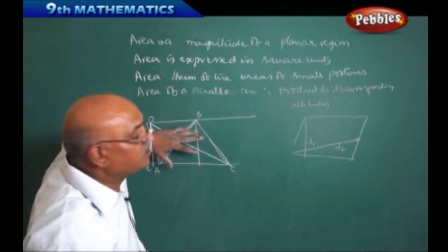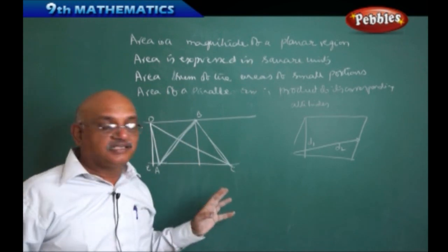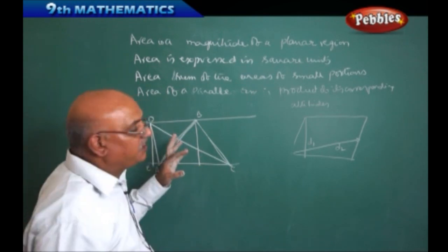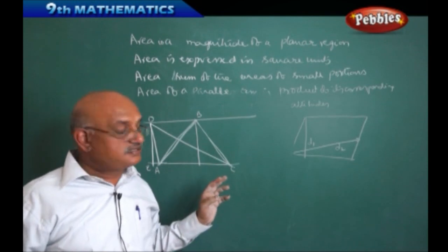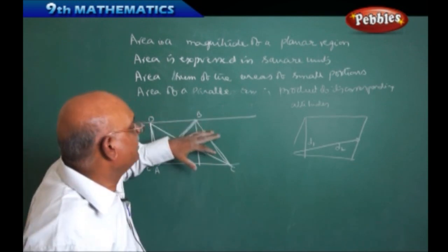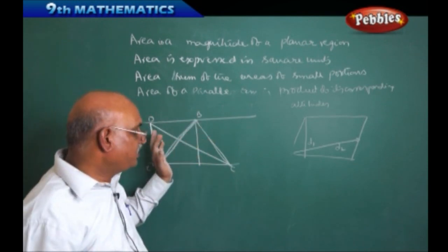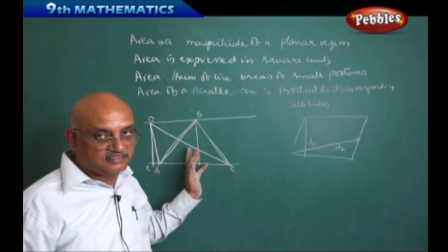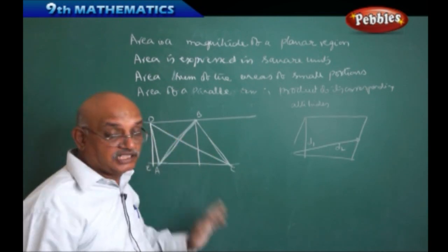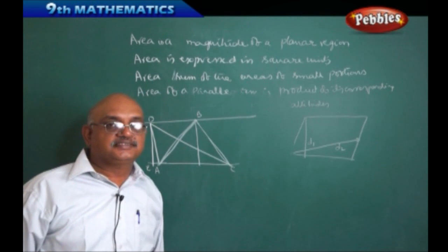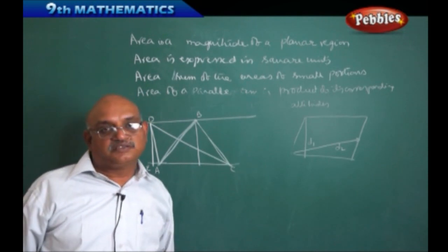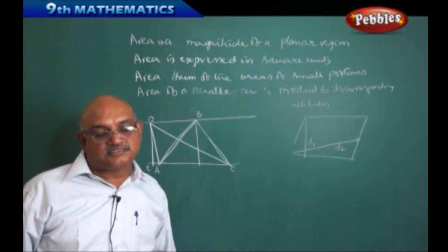Therefore, the areas for both triangles are going to be equal. With regard to this, there is one theorem. Areas in between two parallel lines, if any two triangles are there, then the areas are equal with the same base. This is one theorem. Anyhow, we are going to study that theorem in the subsequent sessions.